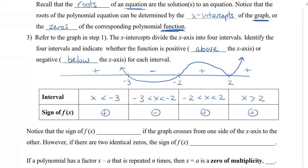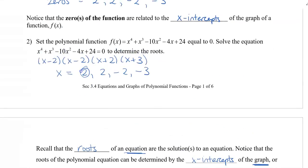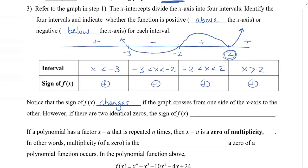Notice that the sign of f of x changes when the graph crosses from one side of the x-axis to the other — it changes from positive to negative because it went through the x-axis. However, notice that there are two identical zeros. We wrote the 2 out two times. At x equals 2, the graph hits the x-axis, and the function is positive before and positive after — it shot back up in the same direction. So the sign of f of x stays the same.